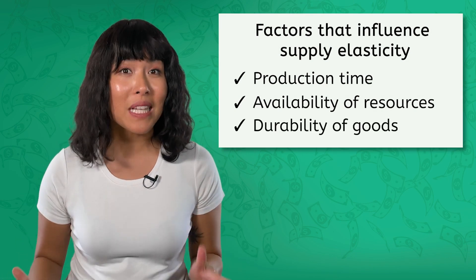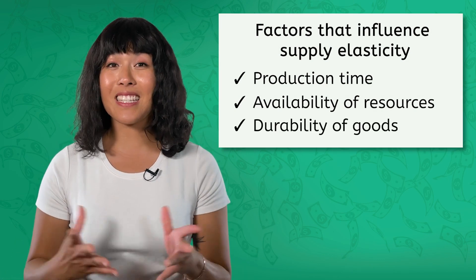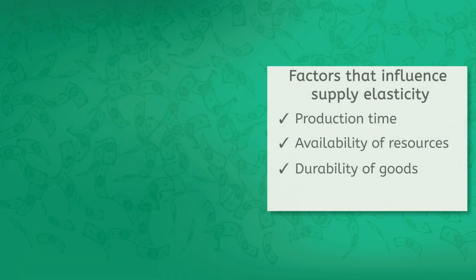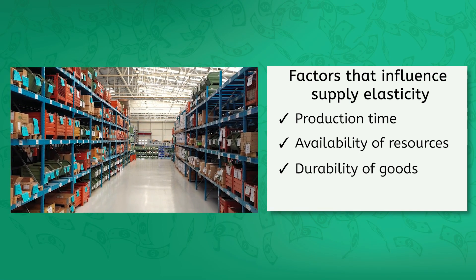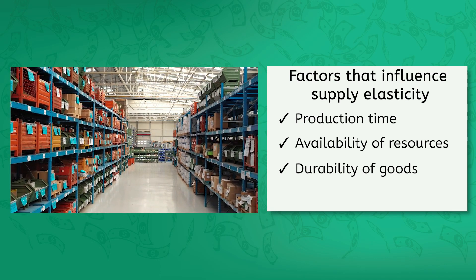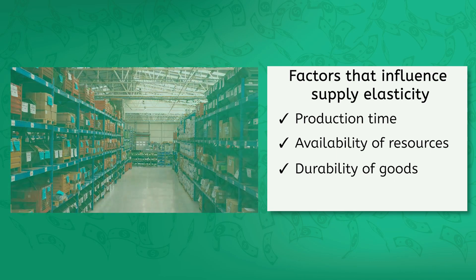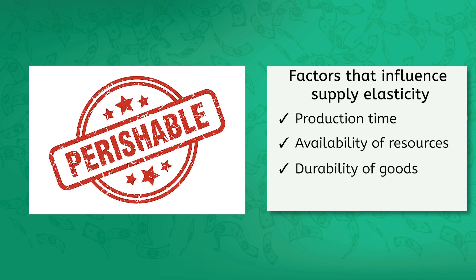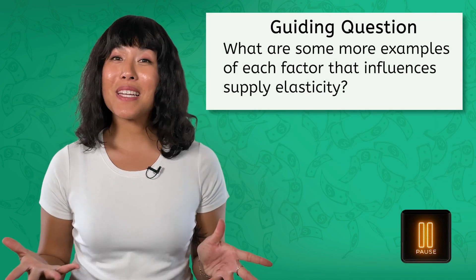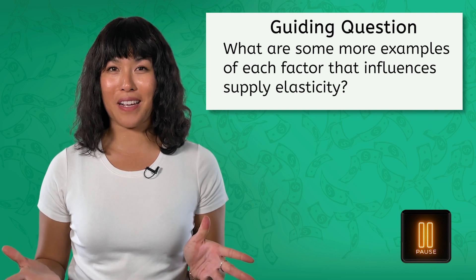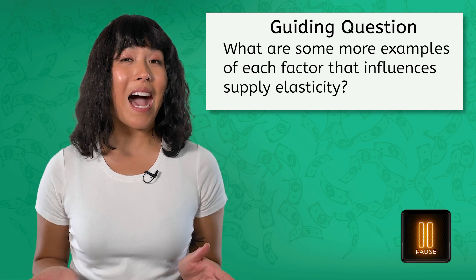Finally, the durability of goods can also affect the elasticity of supply. Durable goods — those that do not wear out quickly and last over a longer period — have a more elastic supply, because they can be stored for a long time without losing their value. But what about things that don't last, like fresh strawberries or the newest iPhone? They can't suddenly be made overnight, and they spoil or become outdated pretty fast. So perishable goods have a more inelastic supply. Take a few minutes to think of some more examples to complete the graphic organizer on supply elasticity.